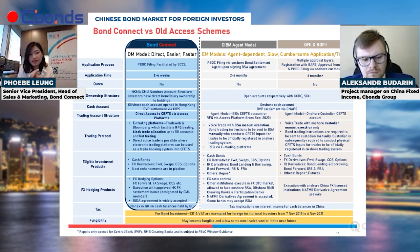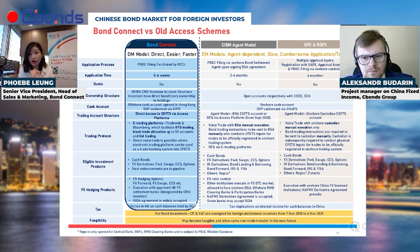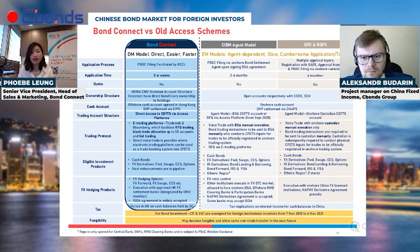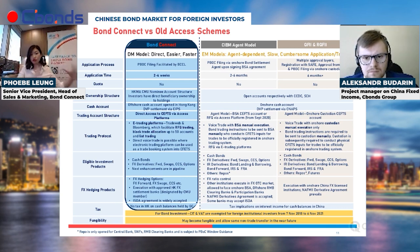With Bond Connect, all accounts — including cash accounts — are offshore, meaning investors will have no cash exposure in the onshore market and no tax implications on their cash. Investors can use their existing global custodians referencing international laws, without signing a new custodian package. This makes preparation comparatively much shorter: two to four weeks for Bond Connect versus two to six months for the CIBM agent model.